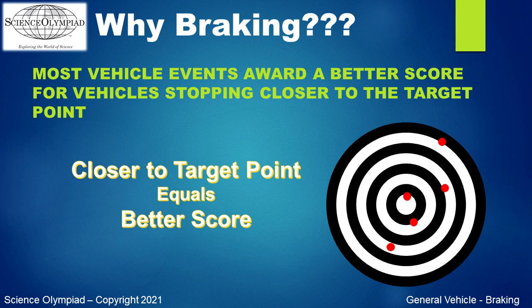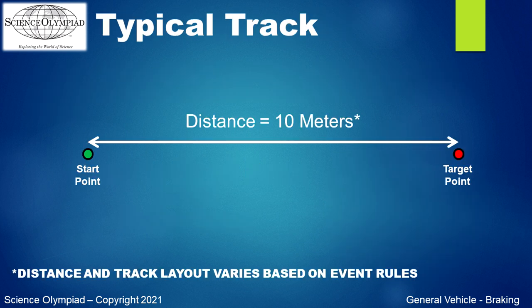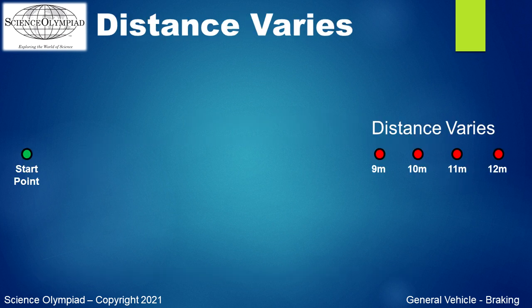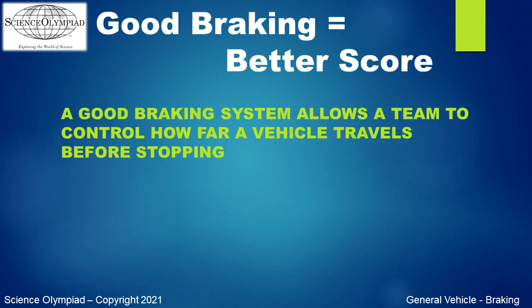Why is braking important? The typical vehicle event awards a better score for the closer to a target point the vehicle stops. A typical vehicle track will define a start point and a target point. The start point is where the vehicle is placed at the start of the run, and the target point is the vehicle's stopping goal. This distance can vary for each tournament. A good braking system is very important to achieving a better score, as it allows a team to control how far the vehicle will travel.